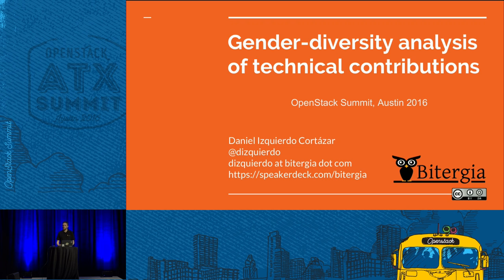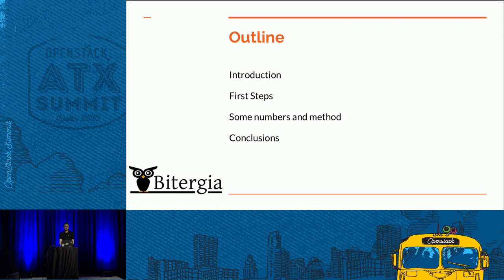We started thinking about all of this and said, maybe we can try to have a look at this. We have some numbers and this is the kind of things I would like to present today. The outline covers an introduction about the story, some context from big companies like Google about gender analysis they have internally, some first steps regarding the architecture in case you would like to apply this to any other project, then some numbers and method.